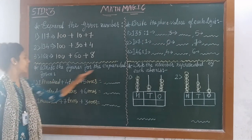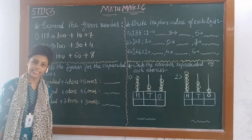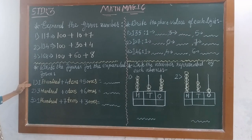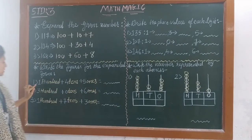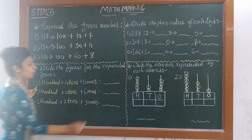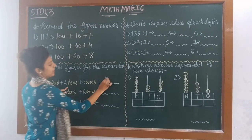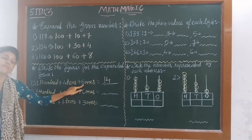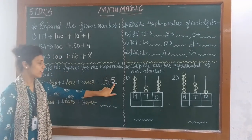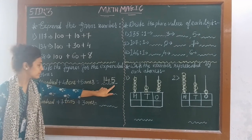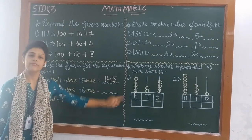Next: write the figures for the expanded form. Expanded forms are given and we have to write the figure. Number 1: 1 hundred, 4 tens and 5 ones. At 100's place, the number is 1. At 10's place, 4. At 1's place, 5. Once again we can check: 1's, 10's and 100's — yes, the answer is right — 145.